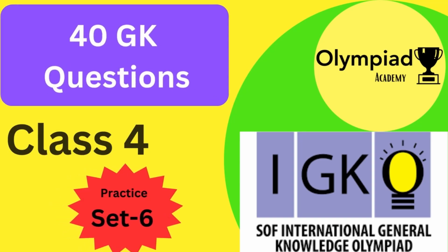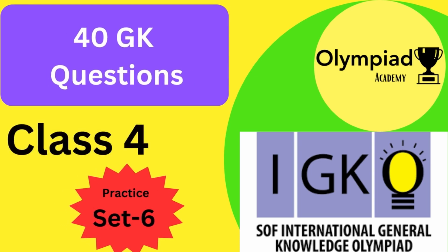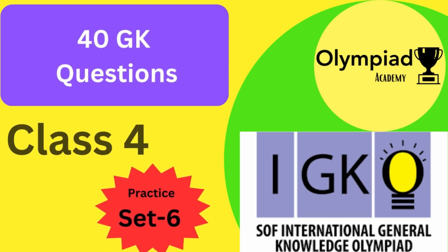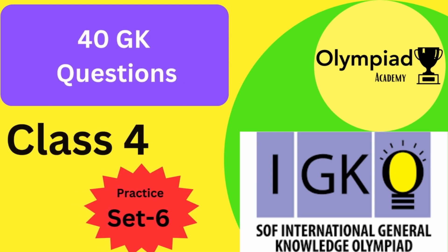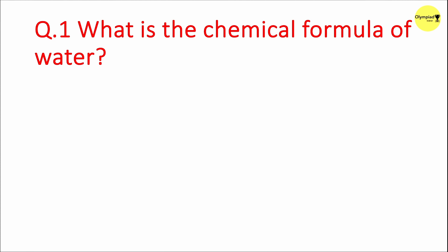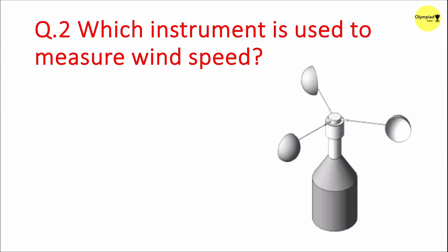Hello friends, welcome once again to Olympia Champs Academy. We hope you must be enjoying this GK series for Olympiad exams. In this video we will learn 40 super hot GK questions. Let's get started. Question 1: What is the chemical formula of water? Answer: H2O. Question 2: Which instrument is used to measure wind speed?